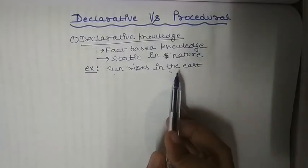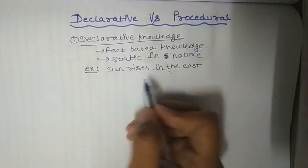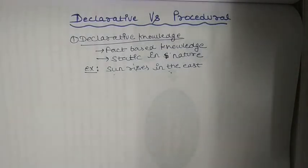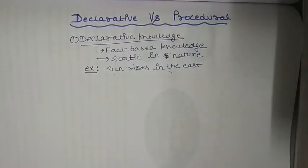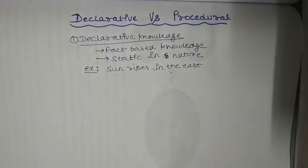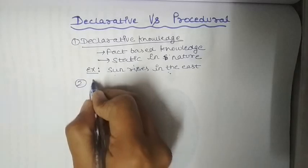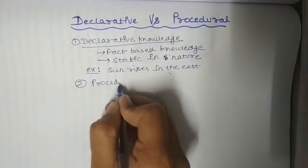Another example is: the sun sets in the west. So this is all about declarative knowledge. Here we will not use any procedures or anything like that. Now the second type is procedural knowledge.